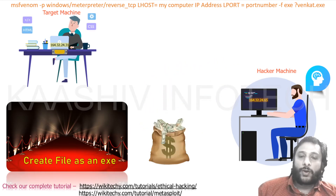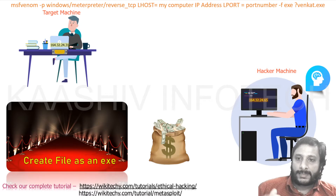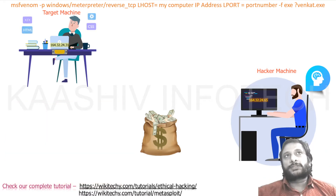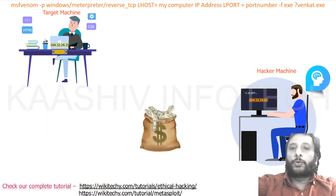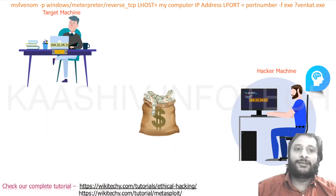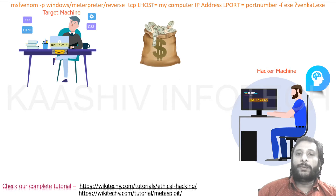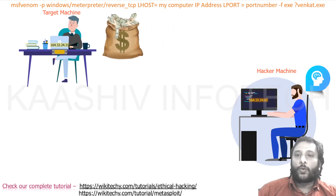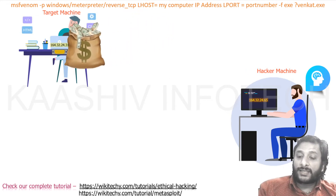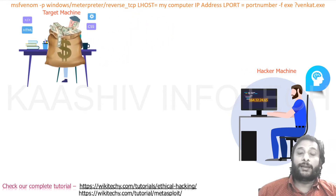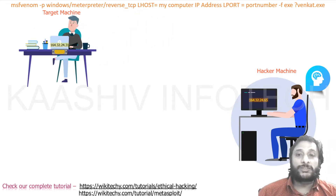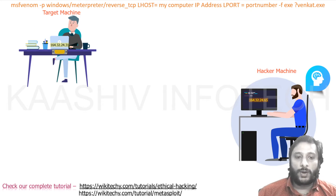Now I have the entire payload ready. Target it, put it in the destination. The target machine will receive it. Once they click on it, the exploit is activated. This is how your Metasploit works.